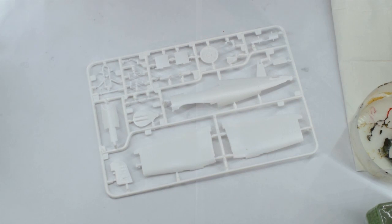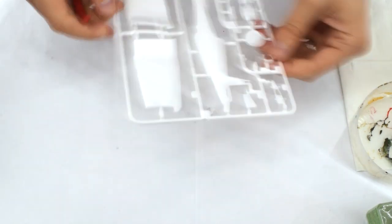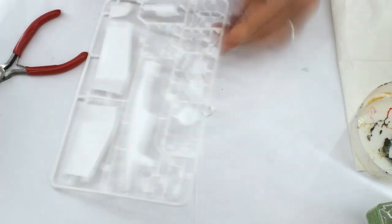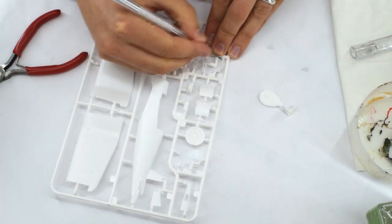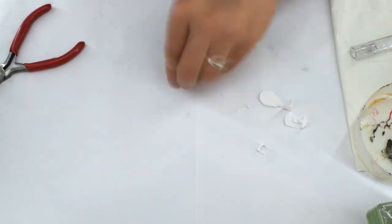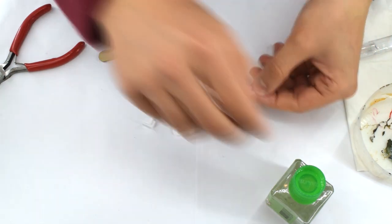I removed the cockpit components from their sprue. I used snips and a sharp knife throughout this build in order to do this. Any rough areas or flash can then be sanded smooth using a nail file. I used Tamiya extra thin cement to bond the plastic parts together.